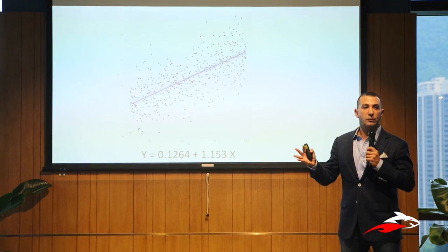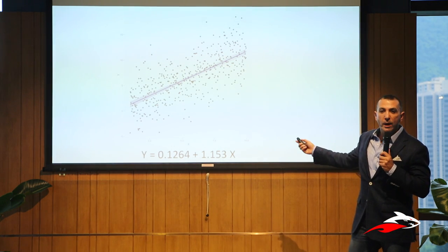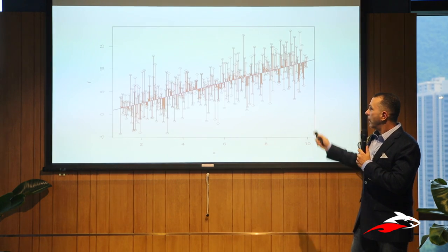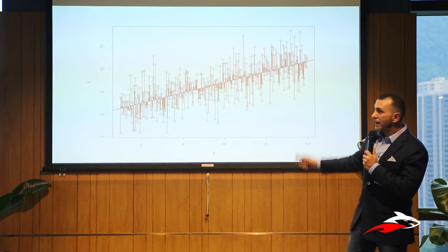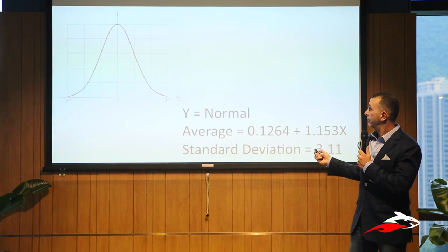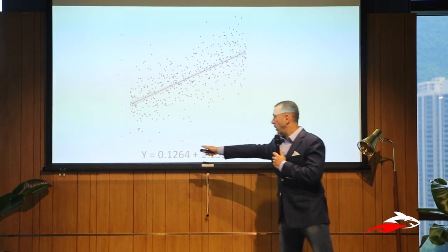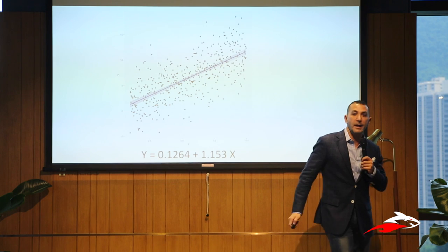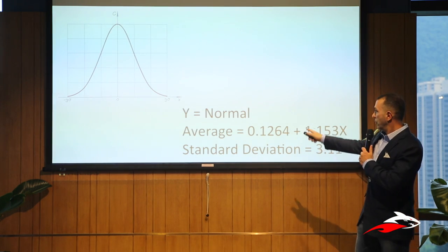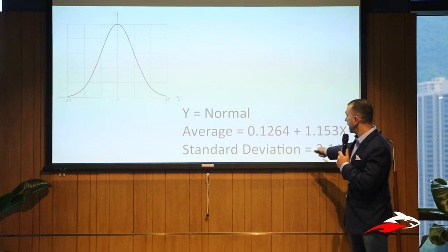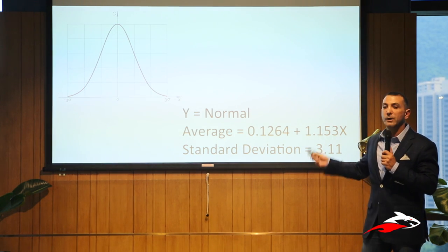People tend to describe things with error bands and confidence bands, but this motivates where we're going with probabilistic programming. Instead of using the equation y is just a formula of x, what we can say is y is somewhere in that curve — we know the average is that equation, but there's a standard deviation. Now we've started to describe and quantify our uncertainty.